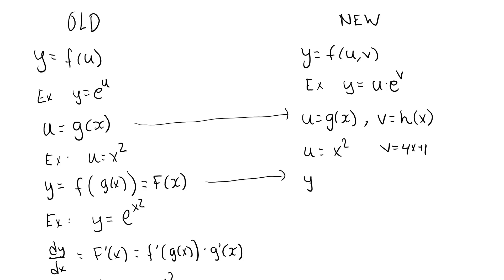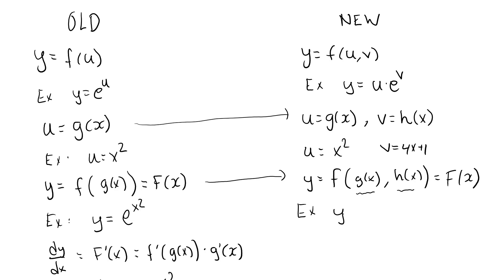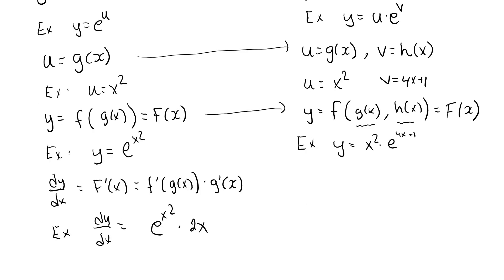Again, I can create a composition here. y is equal to the function of the first variable u, which I can replace with g of x, and the second variable v, which I can replace with h of x. This is now a composite function of two variables, where each of the variables in turn depends on x. Since this expression only involves x, the composite function will be a function of only x. In my example, y equals u times e to the v, where u is x squared and v is 4x plus 1. This is my composite function, capital F of x.